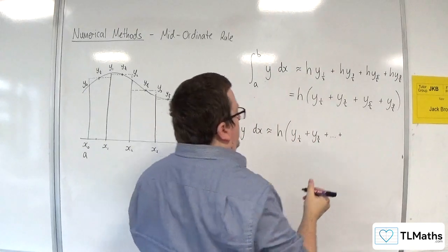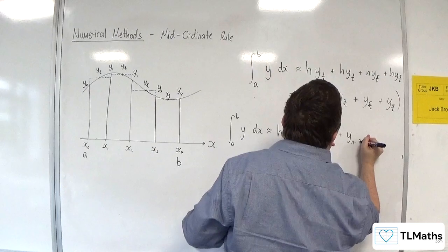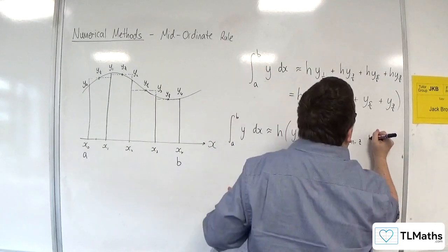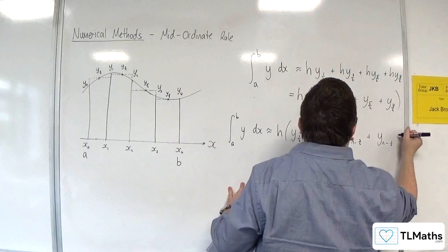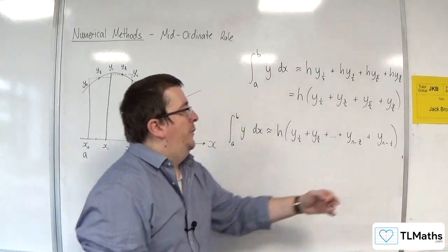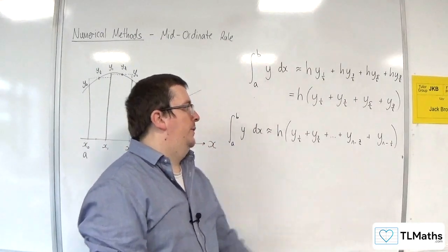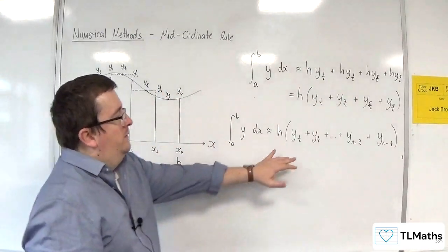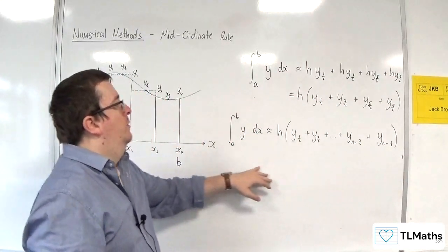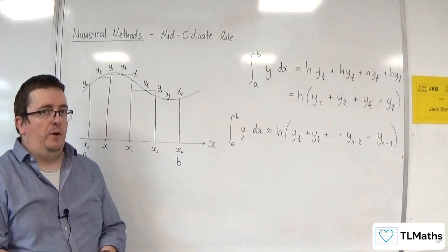y_{n-3/2} plus y_{n-1/2}. That will be the last of your mid-ordinates, and that will be the penultimate mid-ordinate. So that is the mid-ordinate rule, and that is the formula given to you in the AQA formula booklet.